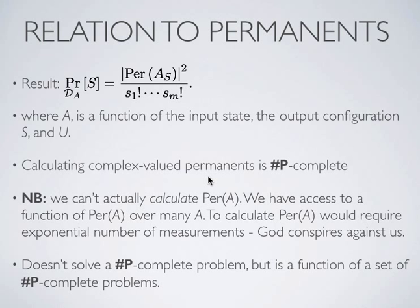I'll make an important comment: boson sampling does not let us calculate matrix permanents. The reason is that we have an output superposition with an exponentially large number of terms, and every amplitude is proportional to a different matrix permanent. To calculate a particular permanent, we'd need to know a particular amplitude with high precision, which would require an exponential number of measurements. So we cannot use boson sampling to efficiently calculate matrix permanents. To use Einstein's terminology, God conspires against us — boson sampling does not let us solve #P-complete problems; rather, it's a sampling problem which is a function of many different #P-complete problems.